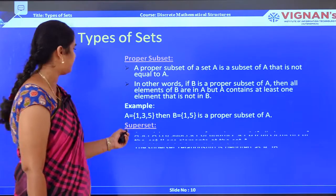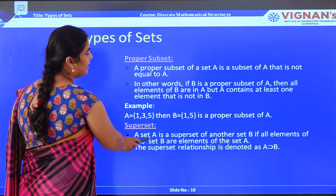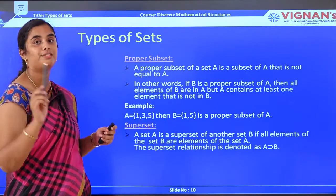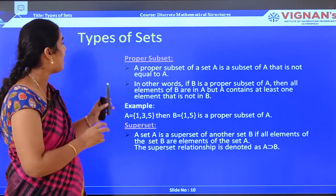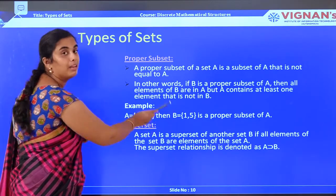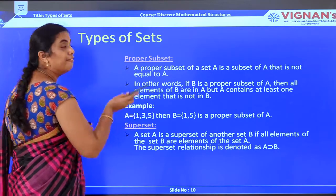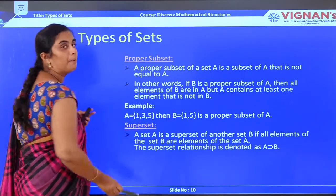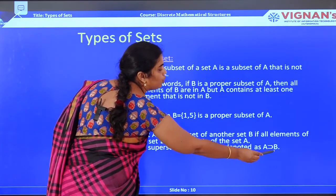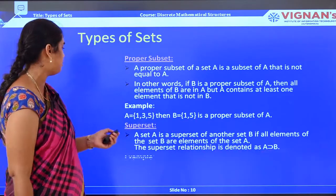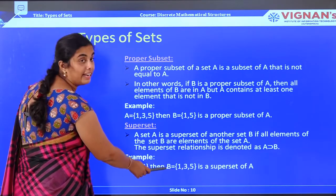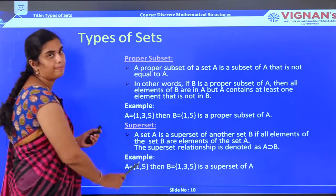Now, the superset. A set A is a superset of another set B if all elements of set B are also elements of set A. It is the same relationship viewed from A's perspective — if B is a proper subset of A, then A is the superset of B. For example, if A = {1, 5} and B = {1, 3, 5}, then B is called the superset of A.